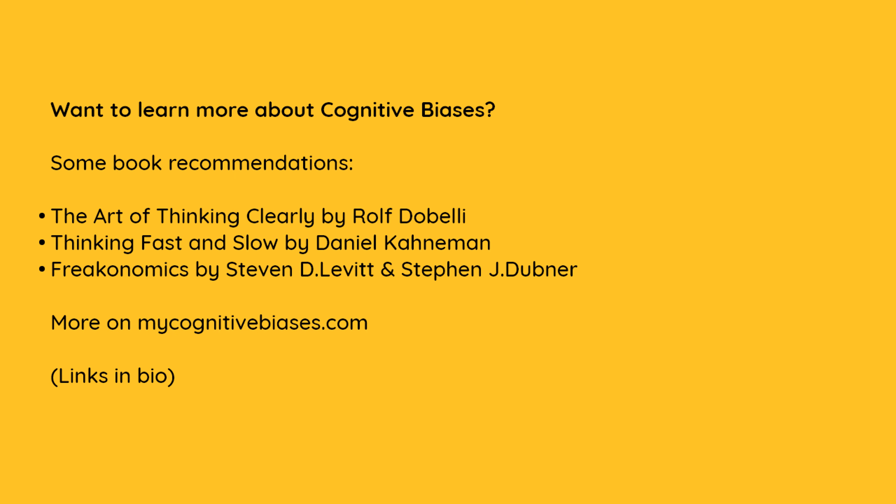Want to learn more about cognitive biases? Some book recommendations: The Art of Thinking Clearly by Rolf Dobelli; Thinking Fast and Slow by Daniel Kahneman; Freakonomics by Stephen D. Levitt and Stephen J. Dubner. More on mycognitivebiases.com.